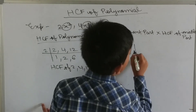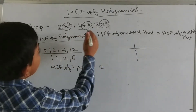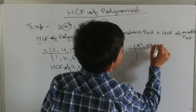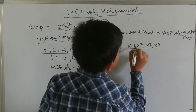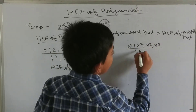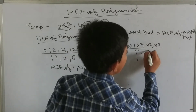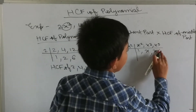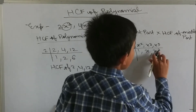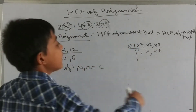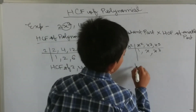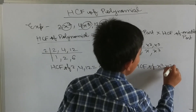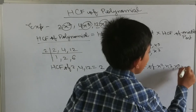Similarly, we have to find the HCF of the variable part: x squared, x cubed, and x to the power 5. Now x squared is common to all three — x squared times 1 is x squared, x squared times x is x cubed, and x squared times x cubed is x to the power 5. There is no further common factor, so the HCF of x squared, x cubed, and x to the power 5 is x squared.